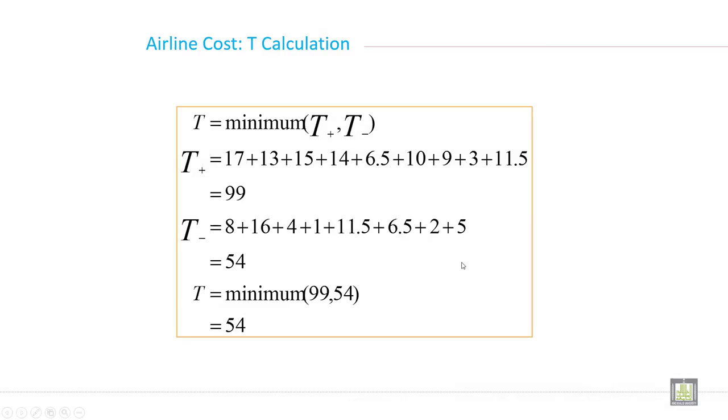So what you can do for airline cost? Just calculate T as the minimum of T plus or T minus. So it is the value of T plus and it is the value of T minus. So T minimum 99 and 54, so T minimum will be 54.